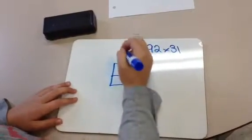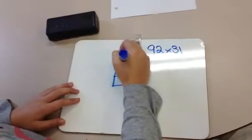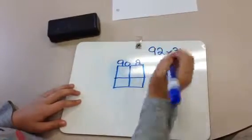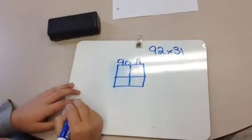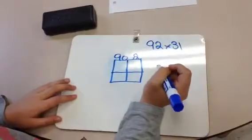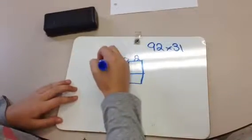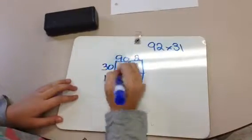And I'm going to break up the number 92 into 90 and 2, and write it across the top. And I'm going to break the number 31 into 30 and a 1.